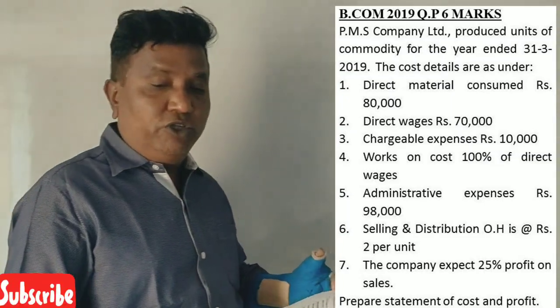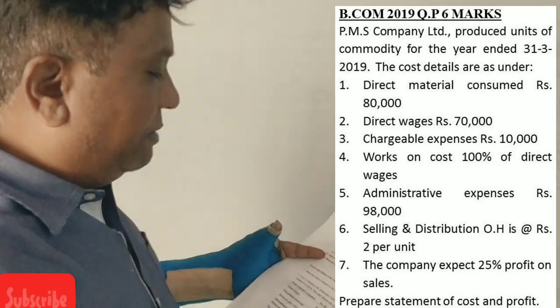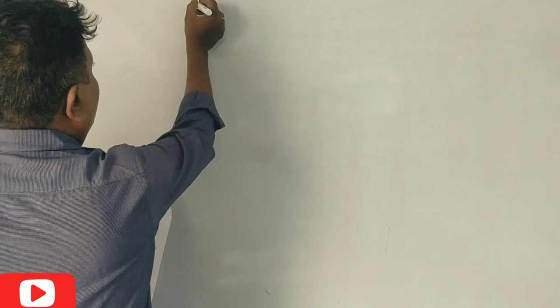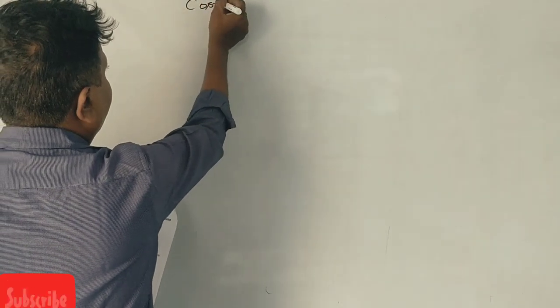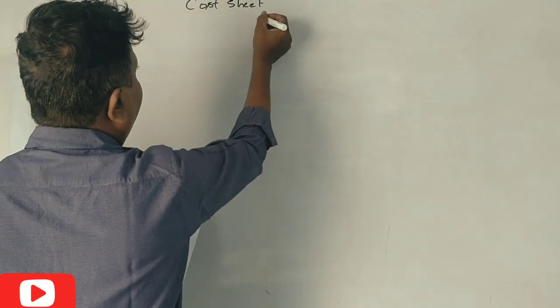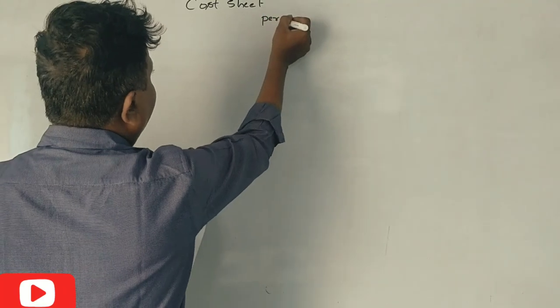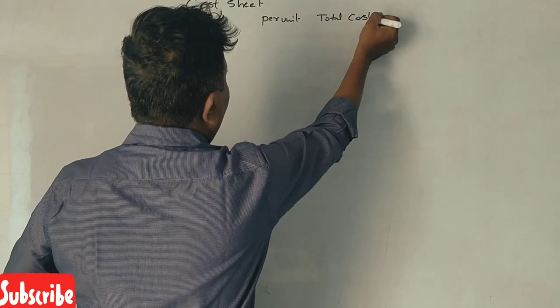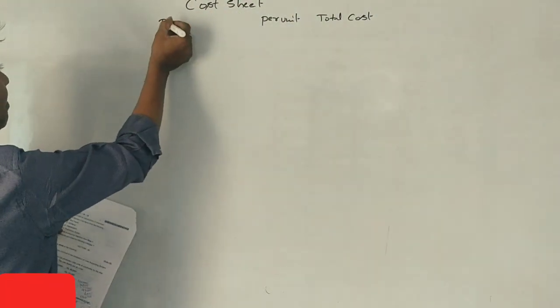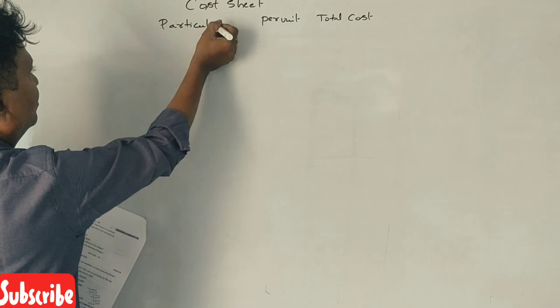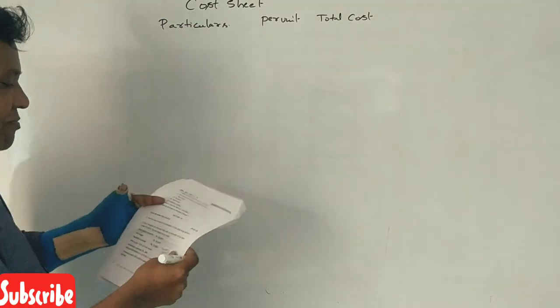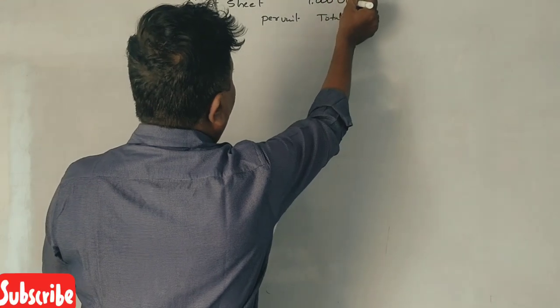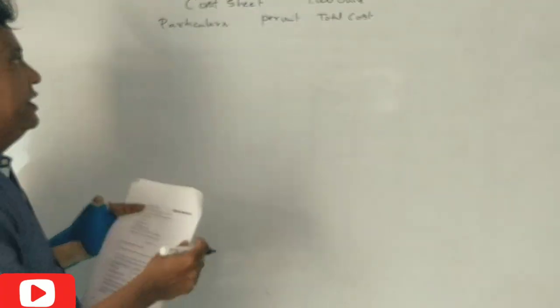See this question is very easy. Cost sheet is one format. First, cost sheet has particulars, per unit, and total cost columns. Now manufacture 1000 units are produced.